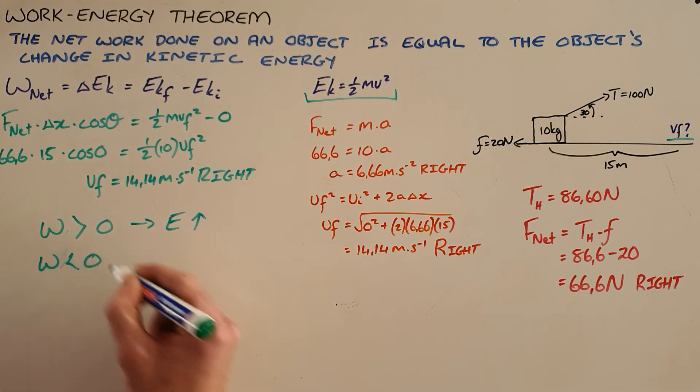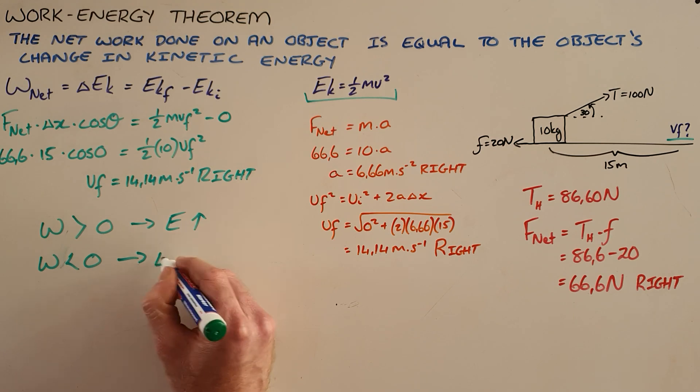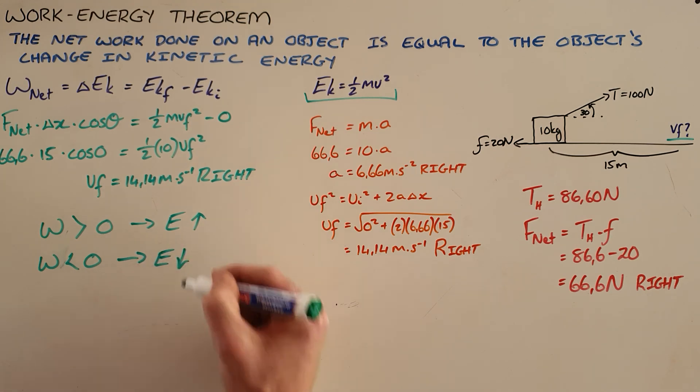And then, conversely, we know that if the work done on an object is negative, what that would mean is that the energy of that object decreases, or energy is removed from that object, so we could say that that object would slow down.